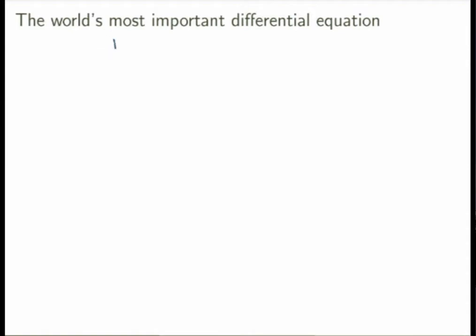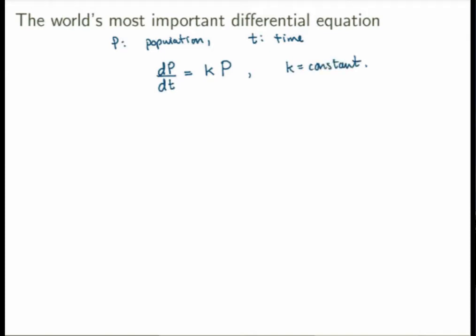Let me call p the population and t the time variable. We want to calculate how p varies as a function of time. Perhaps the first model you could come up with is that the rate of change of the population is proportional to the number of fish — in other words, proportional to the population itself. In terms of a mathematical equation, the rate of change dp/dt would be proportional to p, meaning it equals a constant k times p, where k is an arbitrary constant that depends on the model. That is an example of a differential equation. The solution will be a function p of t that satisfies this equation.